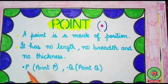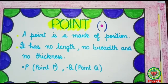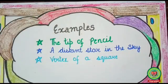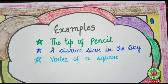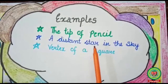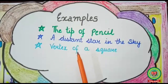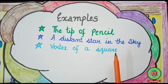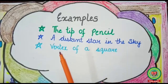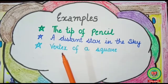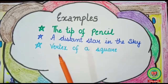You will read it as point B, point Q. Now think about the examples of a point: a sharp-edged pencil, a distant star in the sky, and the vertex of a square. As you know, vertex means corner, so the corner of a square also represents a point.